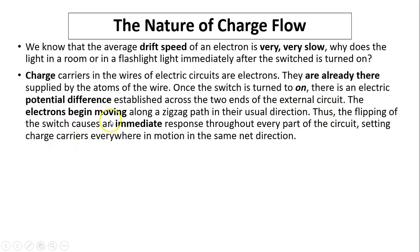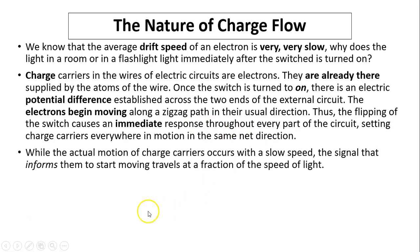So the electrons begin moving along a zigzag path in their unit of charge flow. So when the switch turns on, there is an electric potential difference in the usual direction. Thus, the flipping of the switch causes an immediate response throughout every part of the circuit, setting the charge carriers everywhere in motion in the same net direction.